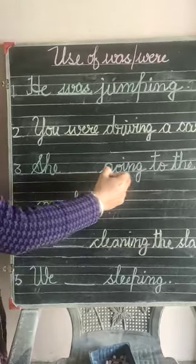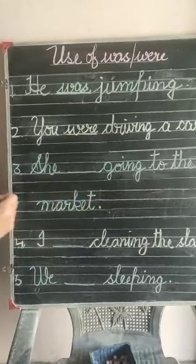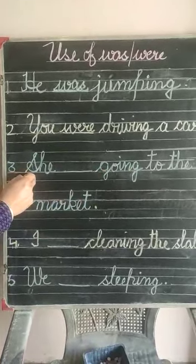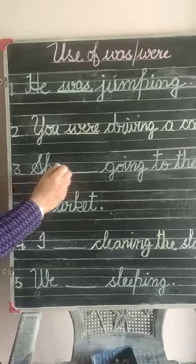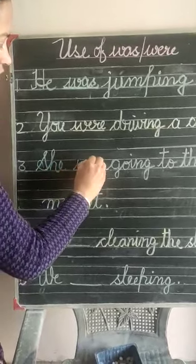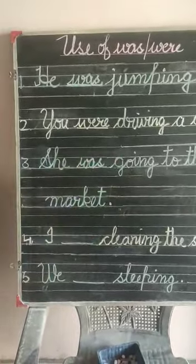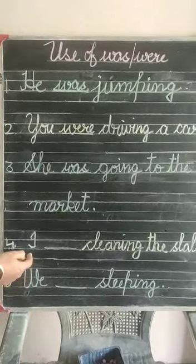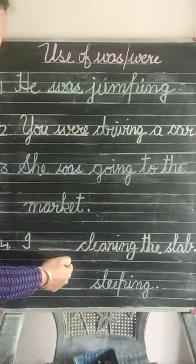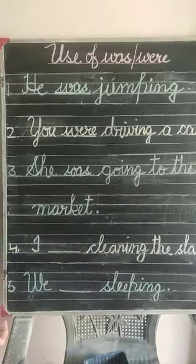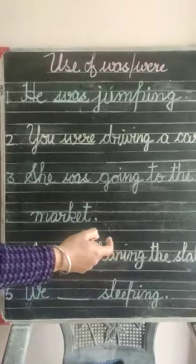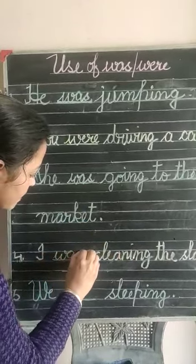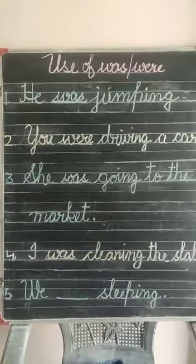She dash going to the market — wo market ja rahi thi — she ke saath was. She was going to the market. I dash cleaning the slab — means main slab saaf kar rahi thi — I ke saath was. I was cleaning the slab.